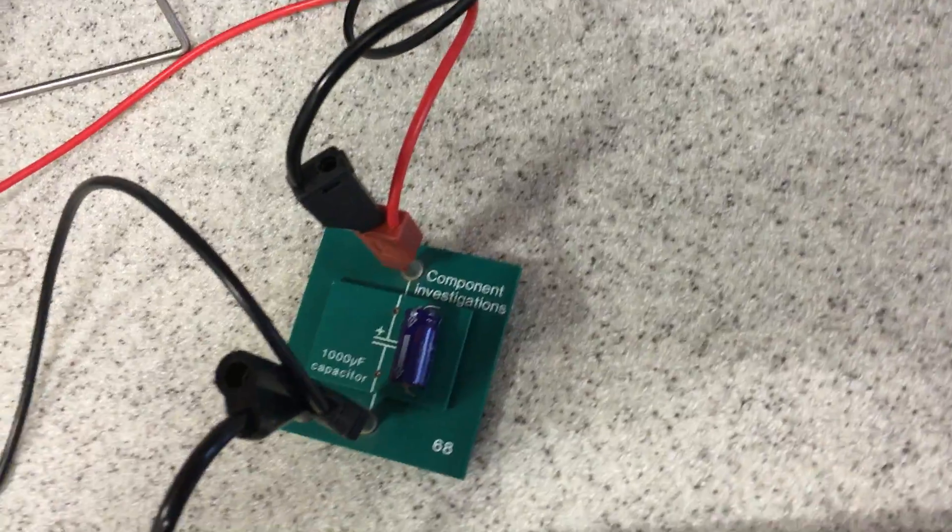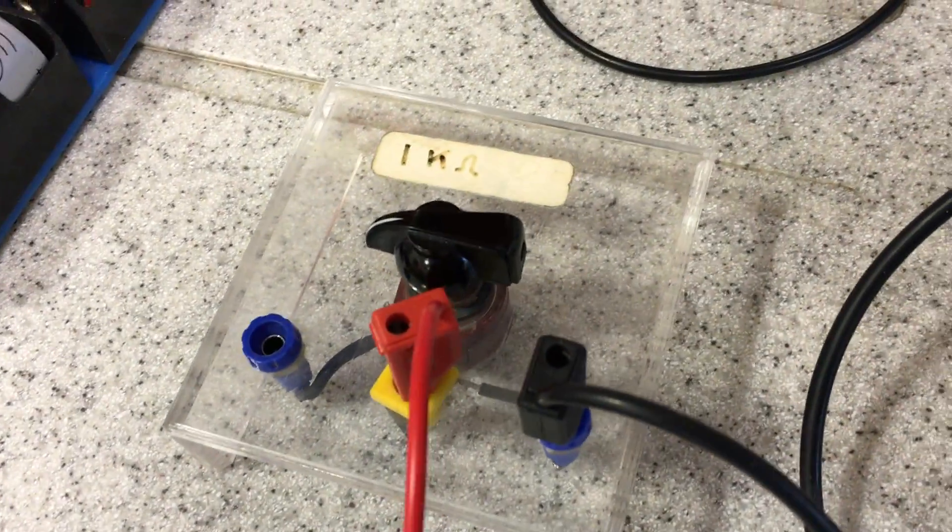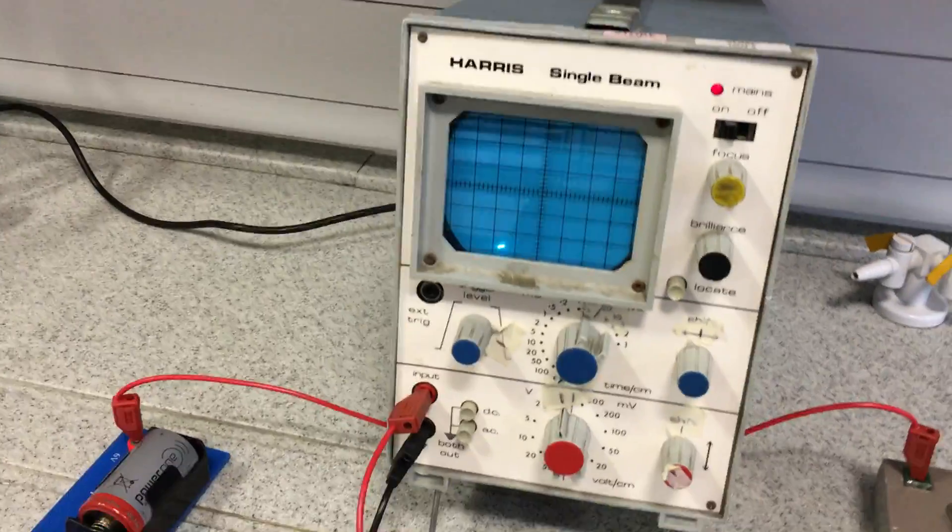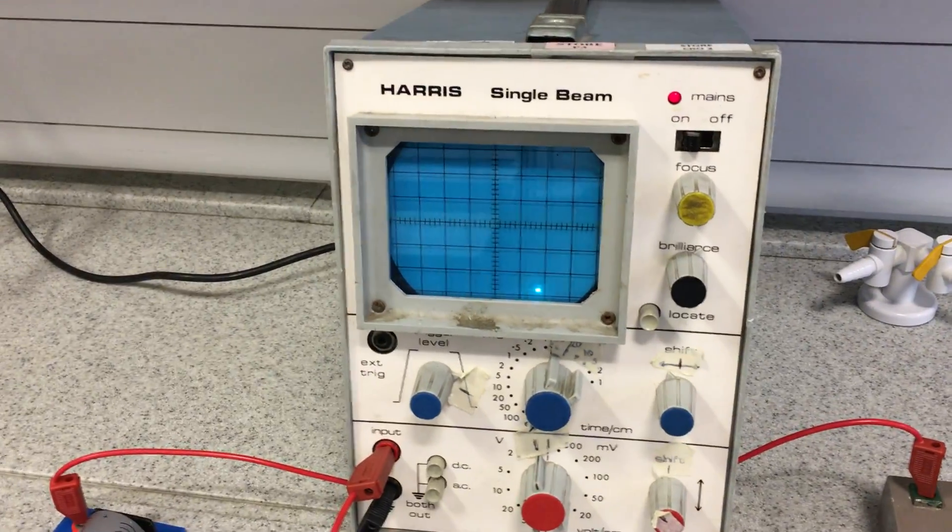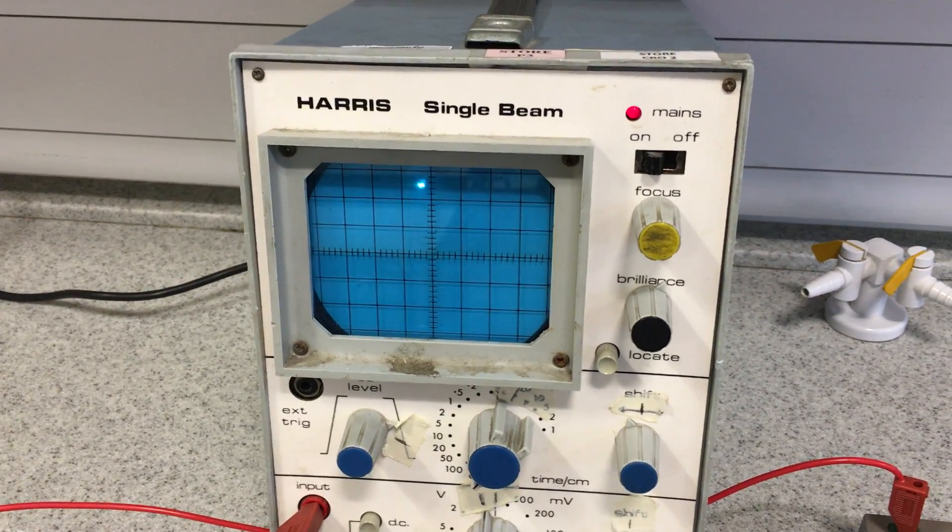It's a 1000 microfarad capacitor. As I charge it up through this variable resistor, a 1 kilo ohm variable resistor. That's what happens to the trace on the screen. So I'm ready to charge it up. And there we go.